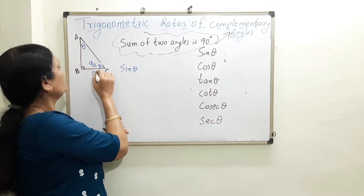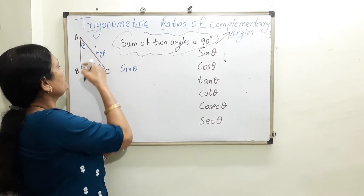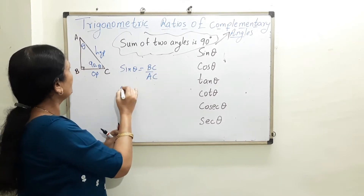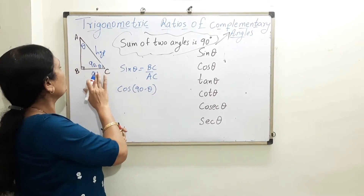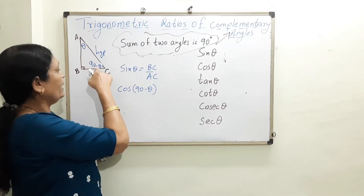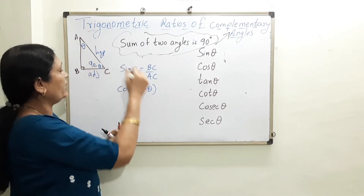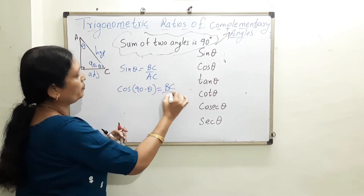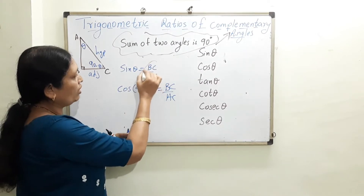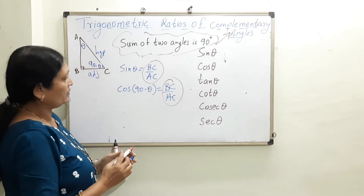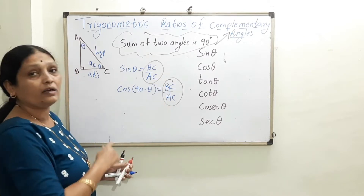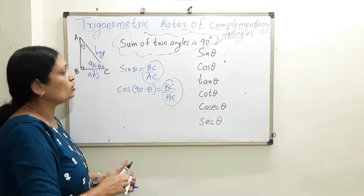We know that sin θ equals opposite upon hypotenuse, which is BC upon AC. Now if I take cos(90 − θ), with respect to the angle 90 − θ, BC is the adjacent side. So adjacent upon hypotenuse gives BC upon AC. What do we see here? sin θ is equal to cos(90 − θ), as both equal BC upon AC.